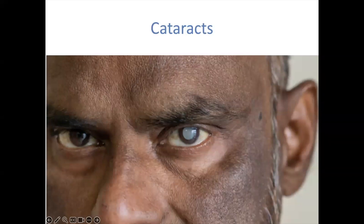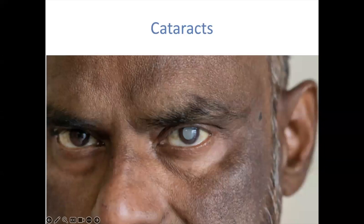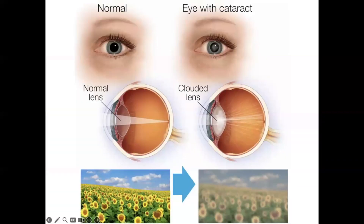Cataracts. The lens of the eye is the only organ in the body that does not shed or lose cells. Nutrients needed by the lens are delivered through the liquid surrounding it rather than by blood vessels. For this reason, higher antioxidant levels than usual are needed to ensure adequate protection. Cataract is a clouding of the lens — a leading cause of functional impairment among the elderly. Here we see a diagram of a healthy lens on the left and a lens that has developed a cataract on the right.